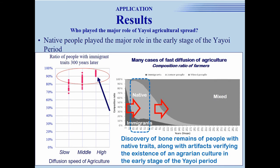However, the right graph in this slide shows the time evolution of the composition ratio of farmers in the case of the fast diffusion rate. In this case, the simulation predicts that native people were, in fact, the primary farmers in the early stage of the Yayoi period, and so played the major role in the spread of agriculture. As verifiable material for the falsifiable hypothesis, our simulation presents the bone remains of people with native traits, along with artifacts verifying the existence of agriculture in the early stage of the Yayoi period.